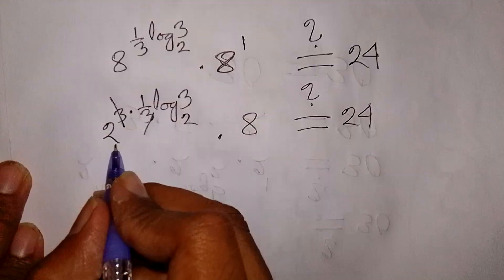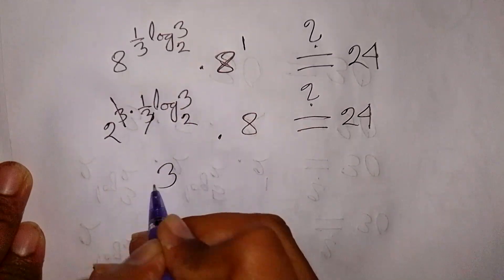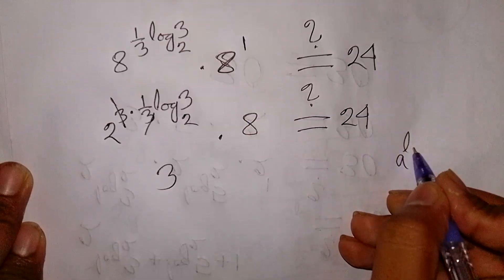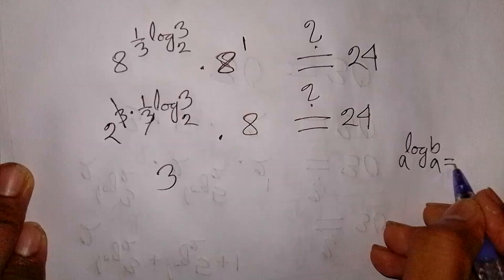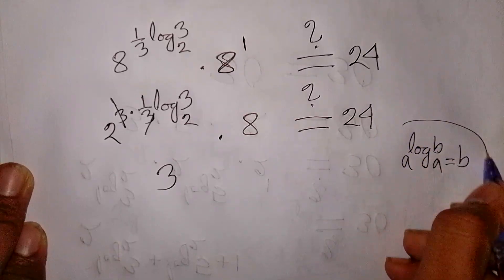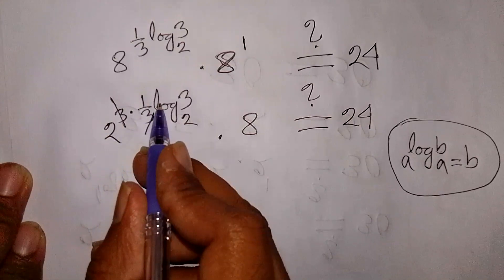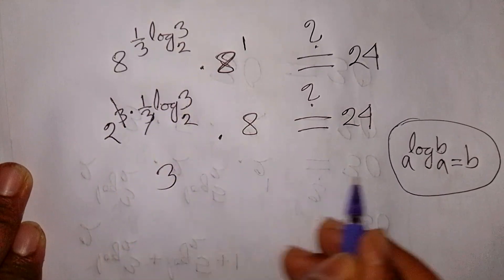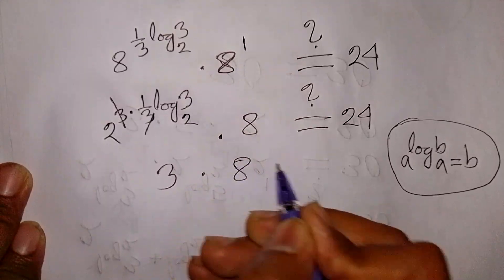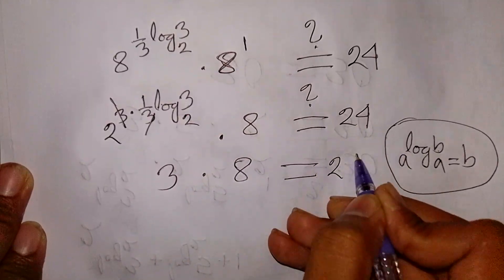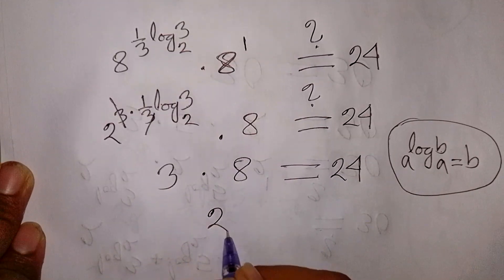So we have 2 to the power log base 2 of 3, which equals 3, according to the rule: a to the power log base a of b is equal to b. So 2 to the power log base 2 of 3 equals 3. Therefore, 3 multiplied by 8 is equal to 24, confirming that 24 equals 24. The answer is verified.